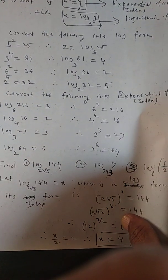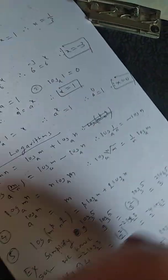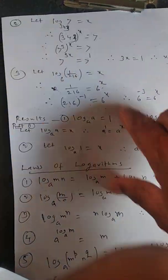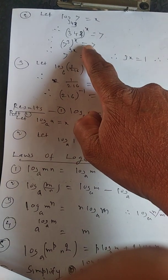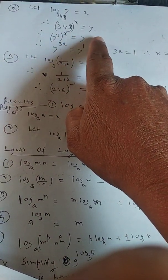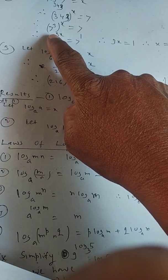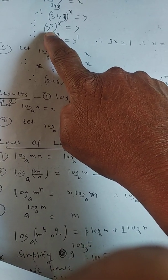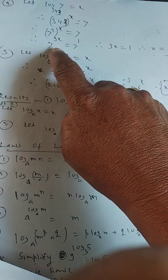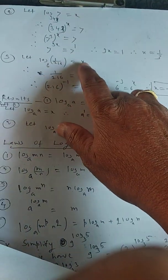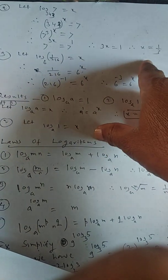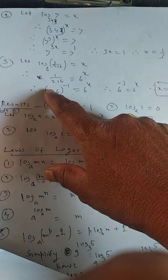Next is log of 7 to the base 343. Assume it as x; then in log form, its index form is 343 raised to x = 7. But 343 = 7 cubed, so we can write 7 cubed raised to x = 7, giving 7 raised to 3x = 7 raised to 1. Therefore 3x = 1, so x = 1/3.